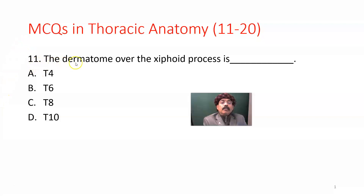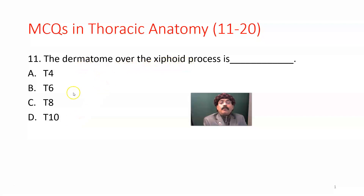Question number 11. The dermatome over the xiphoid process is what? T4, T6, T8, T10. The dermatome over the xiphoid process should be T6. T4 is for the nipple, and T10 is for the umbilicus.